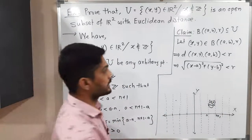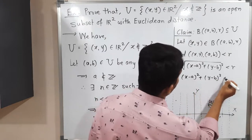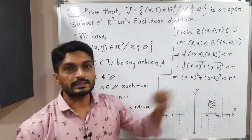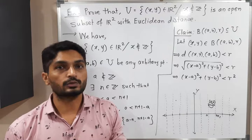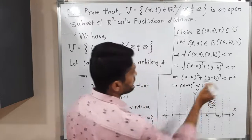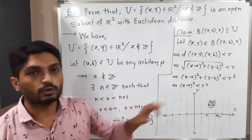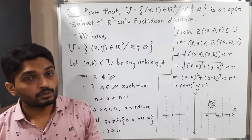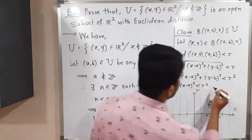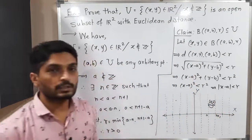To remove the square root, I square both sides: (x-a)² + (y-b)² < r². Since the sum of these two terms is less than r², each individual term is also less than r². So (x-a)² < r². Taking positive square roots of both sides gives |x - a| < r.